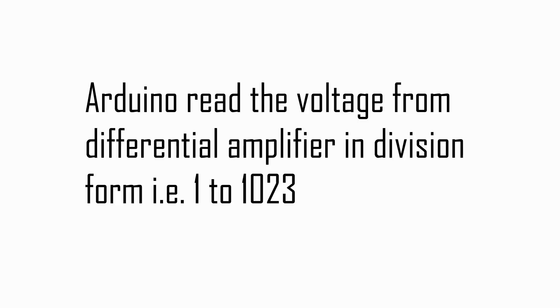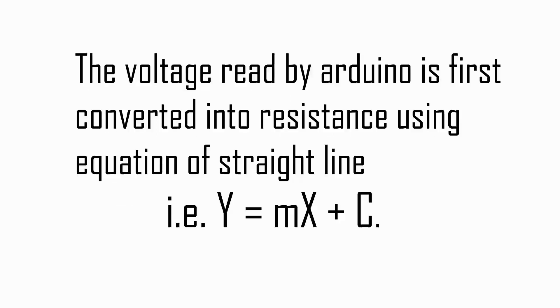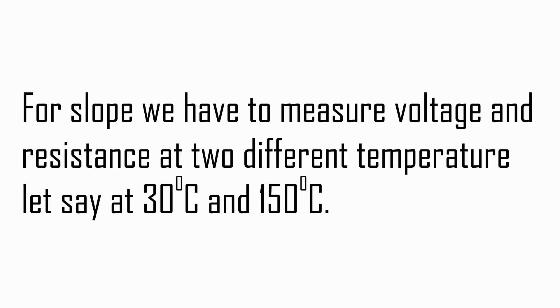As you know, Arduino reads the voltage from differential amplifier in division form, that is 1, 2, 3, 4 up to 1023. The voltage read by Arduino is first converted into resistance using equation of a straight line: y equals mx plus c. Here we have to calculate the value of slope m and constant c.